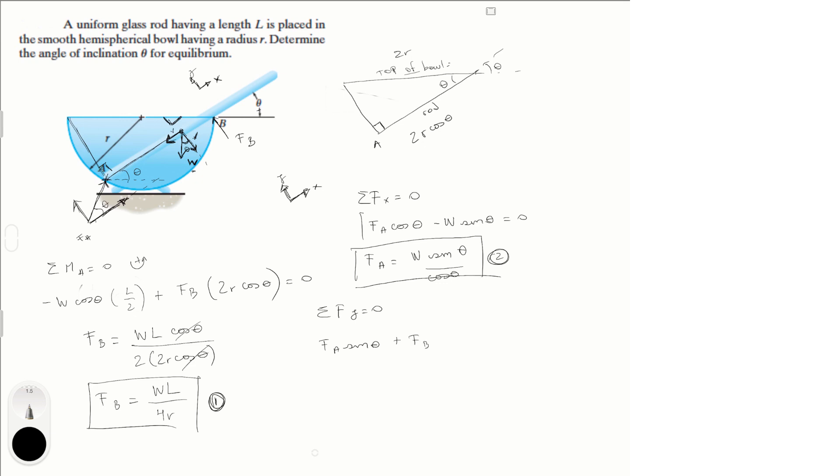plus F of B, which is going straight up in our Y axis, minus the weight times the cosine of theta, which is this component of the weight right here. And all of that is equal to zero. And this is equation 3.